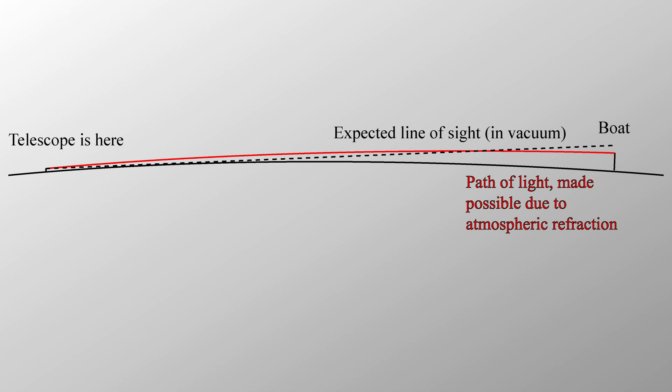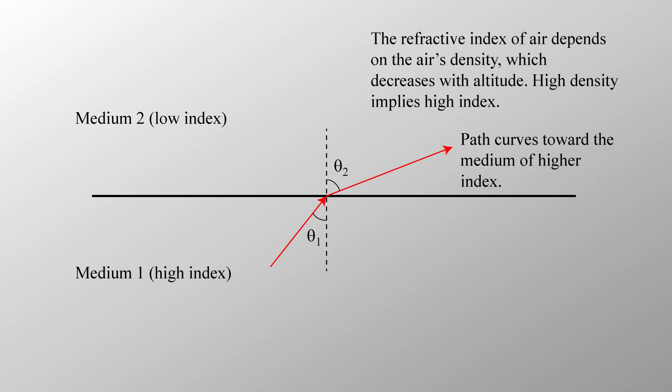Atmospheric refraction, something I didn't take into account in my earlier calculations. In fact, taking it into account, the Earth would look even more flat. Air density, and thus the air's refractive index, decreases with altitude.